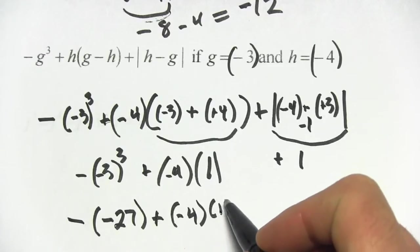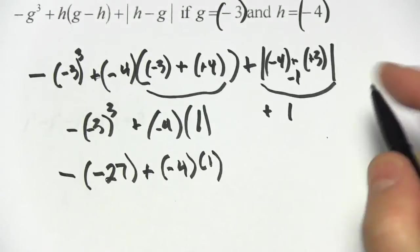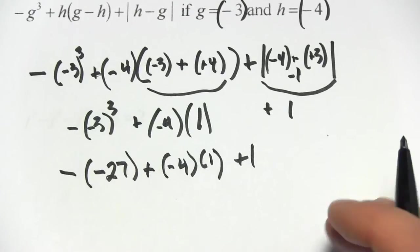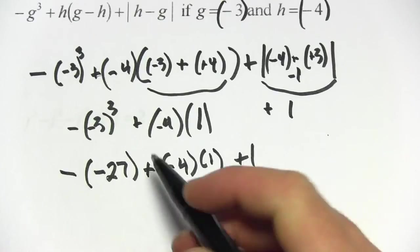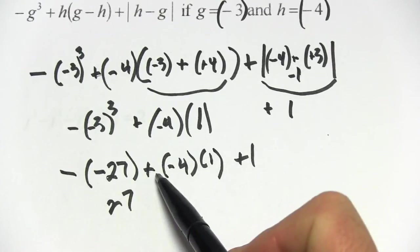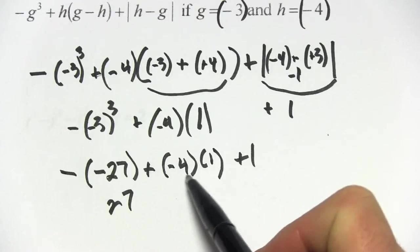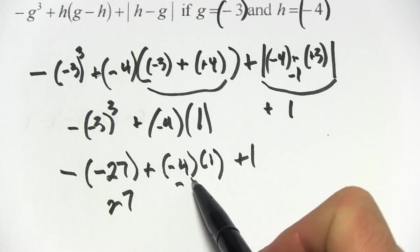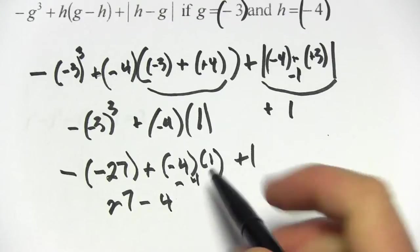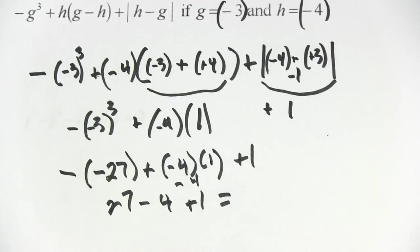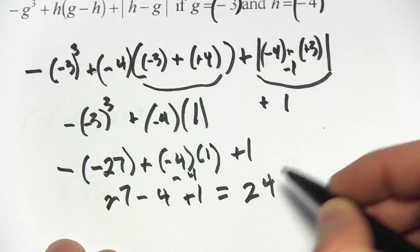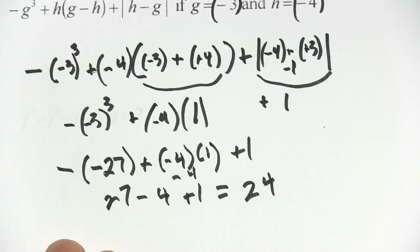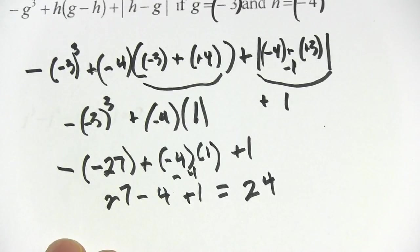Alright, we're almost there. Now I have a negative negative 27, that's a positive 27, and then plus negative 4 times 1, so that's a plus negative 4, that's simply minus 4, and then plus 1. So 27 minus 4 is 23, plus 1, 24. And that is some work with evaluating algebraic expressions that have exponents.